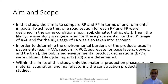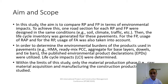The aim of this study is to compare rigid pavements and flexible pavements in terms of environmental impacts. To achieve this, one road section for each pavement type was designed under the same conditions. The life cycle inventory was generated for these pavements. For flexible pavements, usage of RAP, and for rigid pavements, usage of fly ash, was also taken into account. In order to determine the environmental burdens of the products used in pavements — such as hot-mixed asphalt, ready-mix concrete, aggregates for base layers, dowels, and tie bars — published environmental product declarations were utilized. Life cycle impacts were determined within the limits of this study, covering only the material production phase, namely raw material acquisition and manufacturing of the construction products.